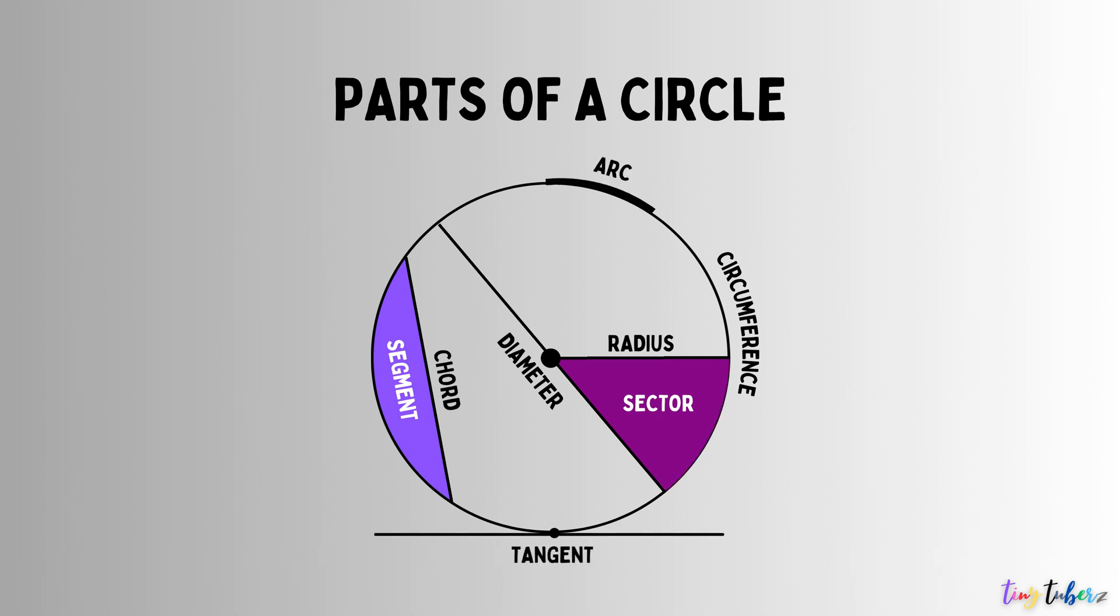Tangent. A tangent is a line that touches the circumference of the circle at only one point. It is perpendicular to the radius at that point.